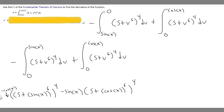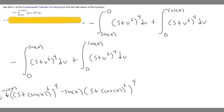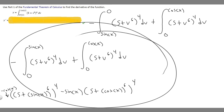Our final answer is: minus cosine of x times (5 plus sine of x to the 6th) to the 4th, minus sine of x times (5 plus cosine of x to the 6th) to the 4th. And that's how you solve this problem.